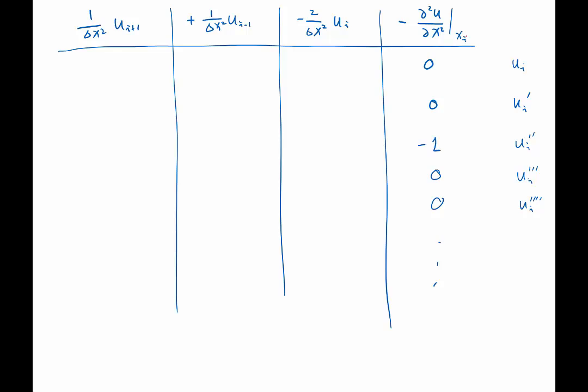Okay, another example is when I look at the third term, which is also very easy. The first coefficient is minus 2 over delta x squared, and all the other coefficients are 0.